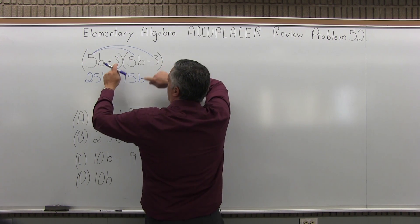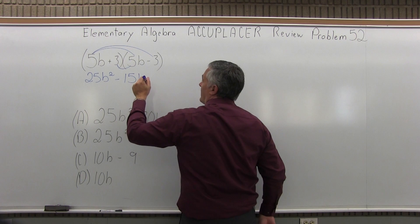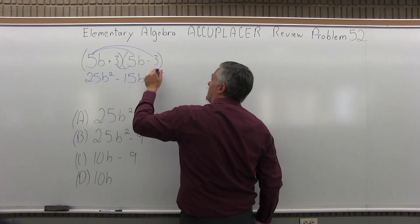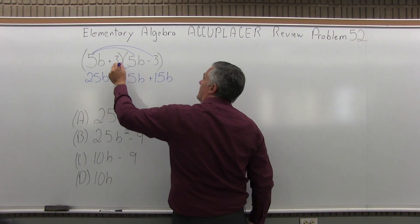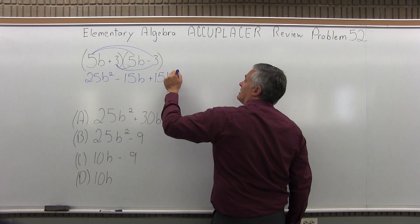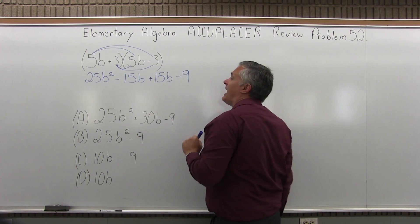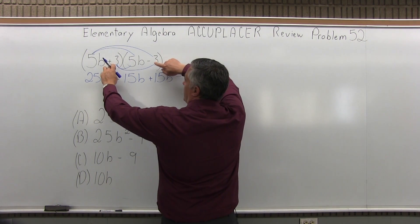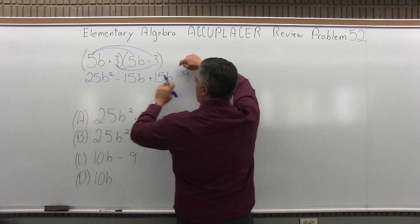And now, 3 times 5B will be positive 15B. And then, 3 times negative 3 would be negative 9. So 3 times 3 is 9, but watch the signs. Positive times negative, negative 9.